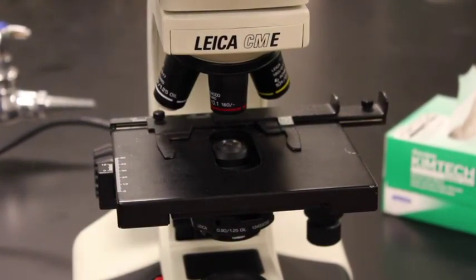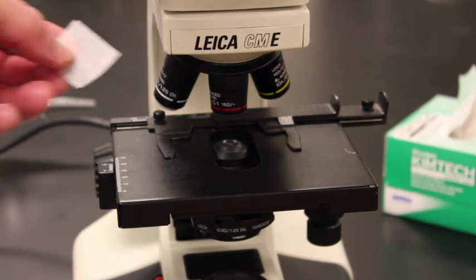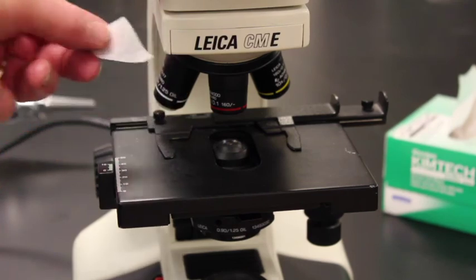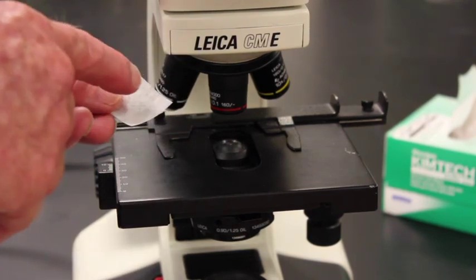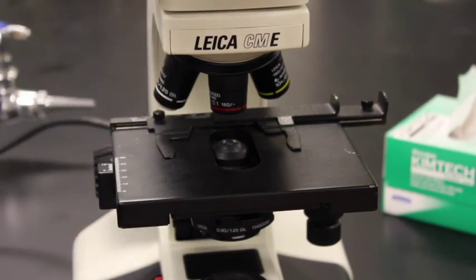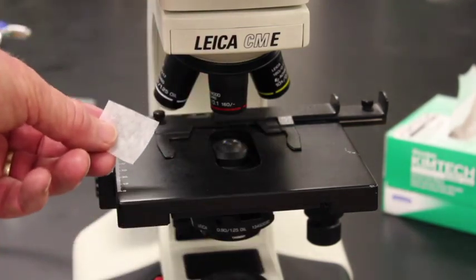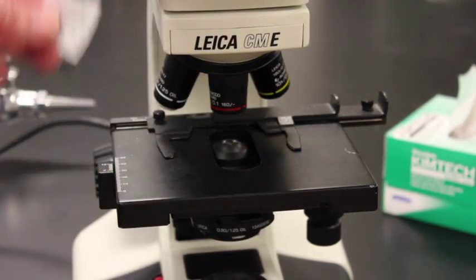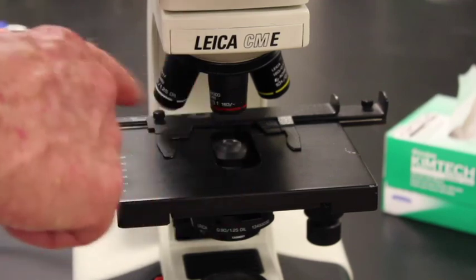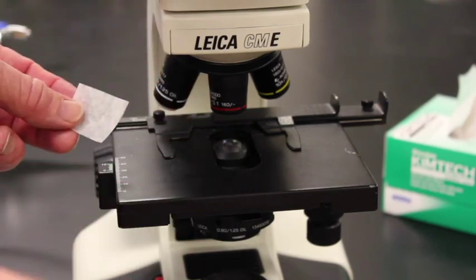And then the last thing that I want to mention is that for a lot of students, one of the things that happens is that they'll take a piece of lens tissue. They will wipe the 100x objective and then get oil all over that lens tissue. And they'll basically take an oily piece of lens tissue, go over here, wipe the 10x, and then in effect wipe oil onto the 10x and oil onto the 40x. Always make sure you have a very clean piece of tissue so that you never wipe oil on an otherwise clean objective.